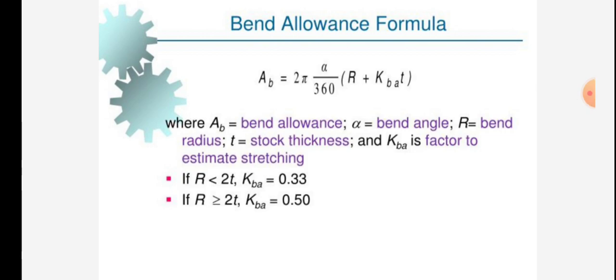Ab = 2π × α/360 × (R + Kba·t), where Ab is the bend allowance, α is the bend angle, R is the bend radius, and t is the stock thickness.